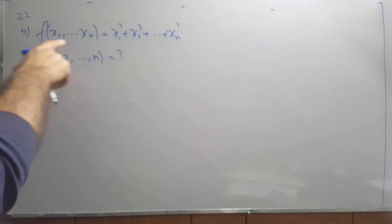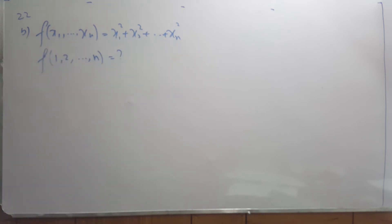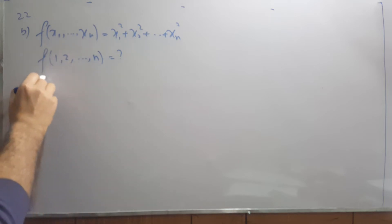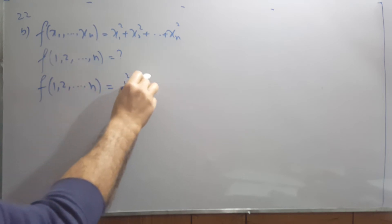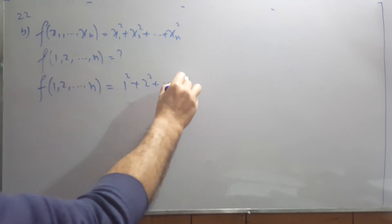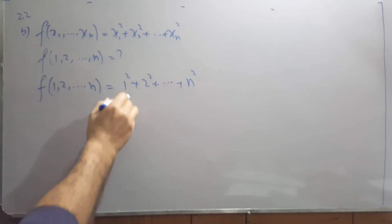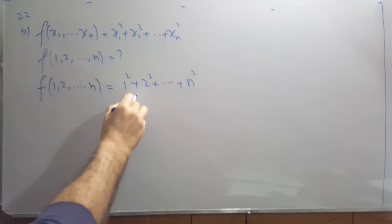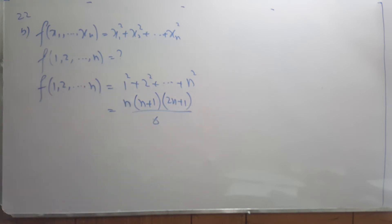Part b asks: if f(x₁, x₂, ..., xₙ) = x₁² + x₂² + ... + xₙ², find f(1, 2, 3, ..., n). Substituting the values, we get 1² + 2² + 3² + ... + n². According to the formula for the sum of squares, this equals n(n+1)(2n+1) divided by 6, which is a formula from the sequences and series chapter.